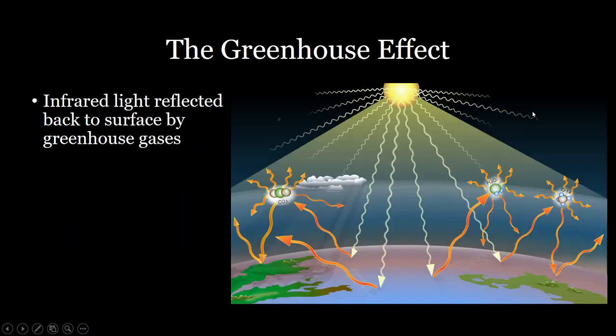So that brings us to the greenhouse effect. So the greenhouse effect is really important for understanding climate change, as well as understanding the amount of heat that's stored in the atmosphere. So all the greenhouse effect is, is the idea that infrared light is reflected back to the surface of the earth by greenhouse gases.